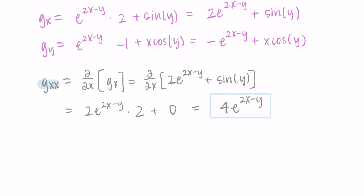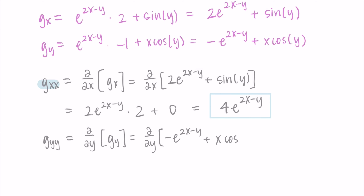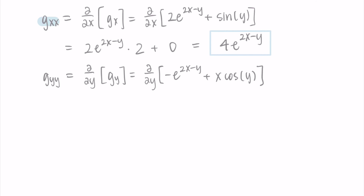Now let's differentiate with respect to y twice: taking the derivative with respect to y of -e^(2x - y) + x·cos(y). For -e to the something, I multiply by the derivative of the exponent, which is negative 1. Then the derivative of x·cos(y): x is a constant, and the derivative of cos(y) is -sin(y), giving -x·sin(y). Cleaning this up: e^(2x - y) - x·sin(y).